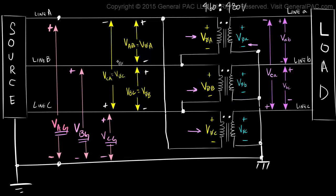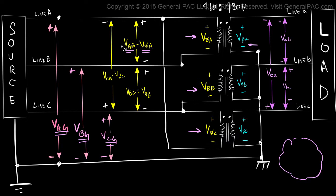Now line-to-line voltages are a little bit tricky. On the delta side, the high voltage side, the line-to-line voltage across line A and B is labeled VAB, which is also equal to the voltage across winding A, or Vphase A. If you are having a hard time understanding this, just click on the link where we talked about it in the previous tutorials. The line-to-line voltage across line B and line C is labeled VBC, which is also equal to the voltage across winding B on the high voltage side. And lastly, the voltage across line C and line A is labeled VCA, which is equal to the voltage across winding C.